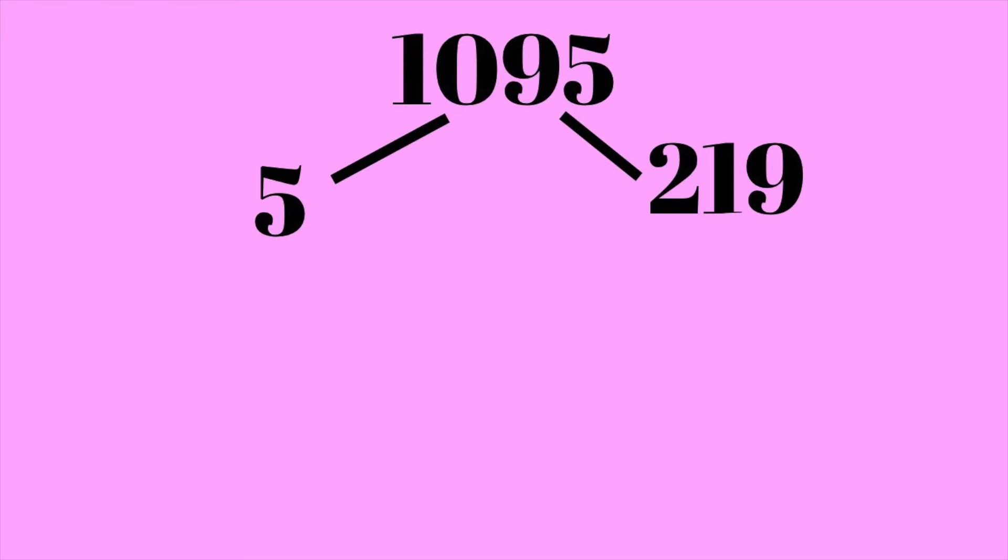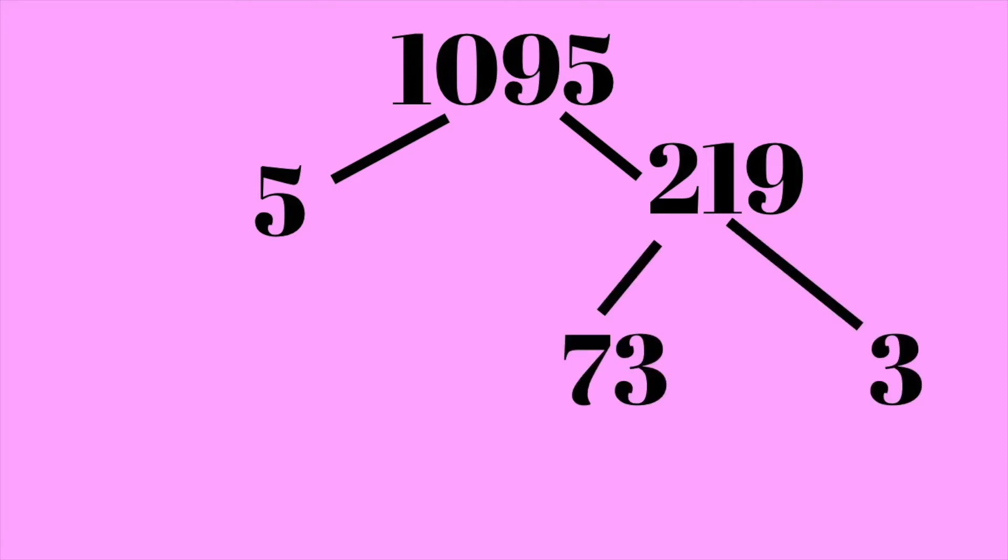A good example of this is 1095. It ends in 5, so start by dividing by 5. It turns out 1095 is the product of 5 and 219. Now 219 looks large, but if I add up the digits — 2 plus 1 plus 9 — that equals 12, which is divisible by 3, meaning 219 is divisible by 3. Dividing by 3 gives us 3 and 73, and a quick check tells us 73 is a prime number. If you're not sure, plug it into your calculator and try dividing by a few common numbers — if none divide evenly, it's pretty safe to say it's prime.